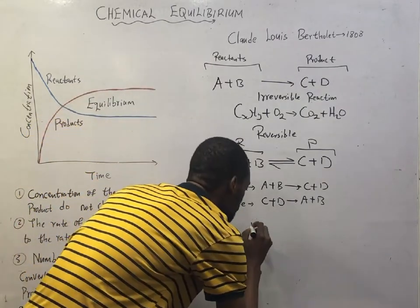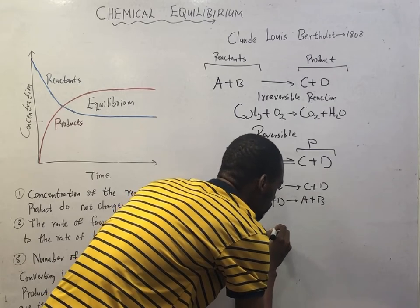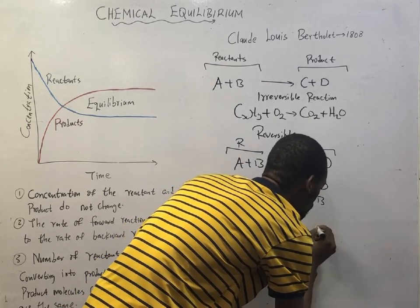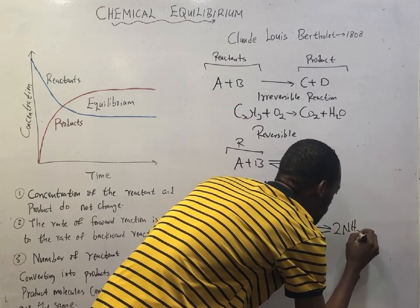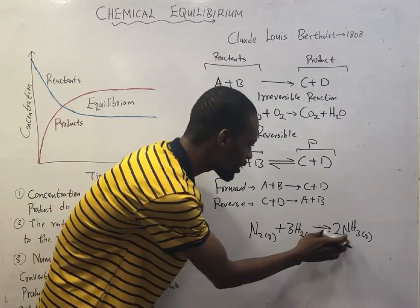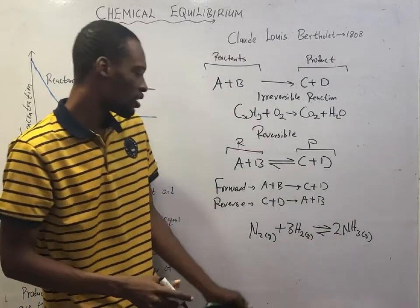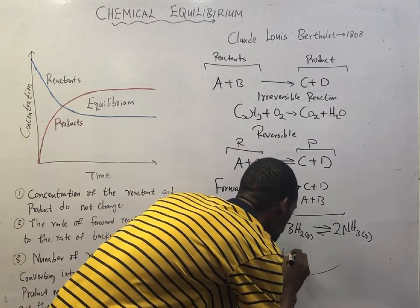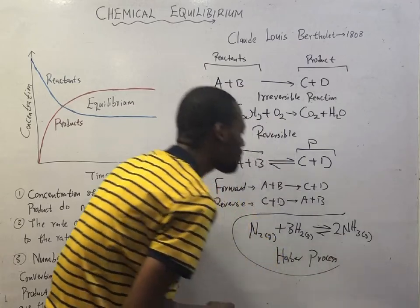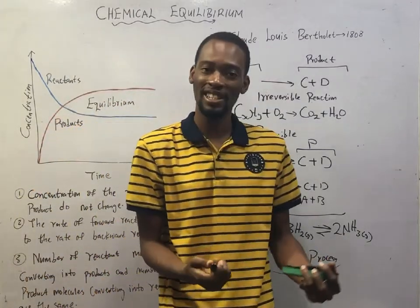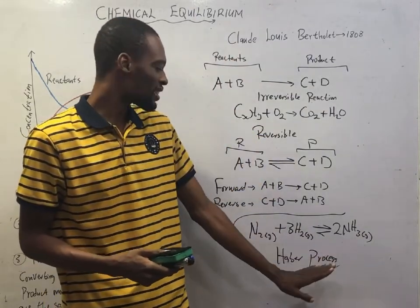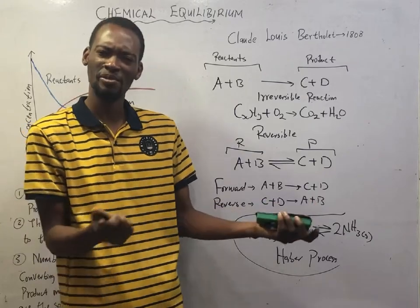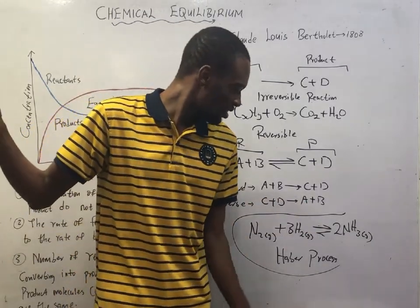For example, if nitrogen gas N₂ reacts with hydrogen gas 3H₂, we get 2NH₃ gas. This is a reversible reaction known as the Haber process — the industrial process of producing ammonia. The contact process is used to produce H₂SO₄.